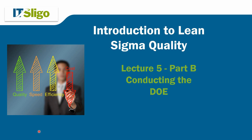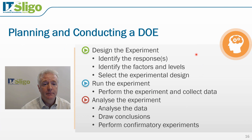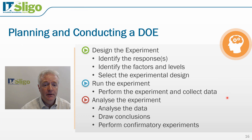Welcome to Lecture 5, Part B. In this section, we will look at the aspects we need to take into consideration when conducting the experimental design. We are going to identify how we will design our experiment by means of identifying our responses, factors and levels. We will then look at how we will run the experiment and collect the data, and then finally identify how we will analyse the experimental data.